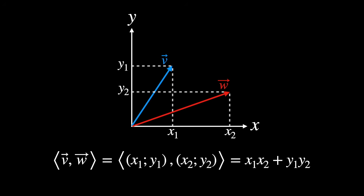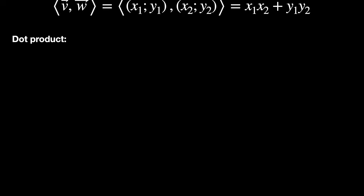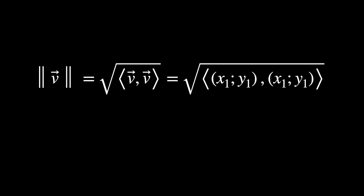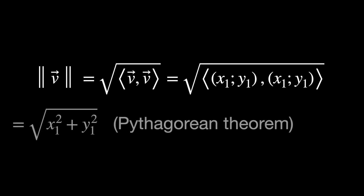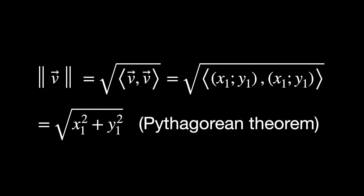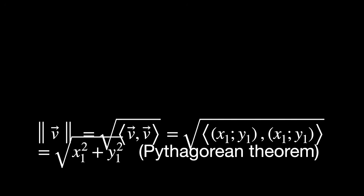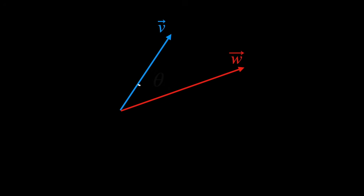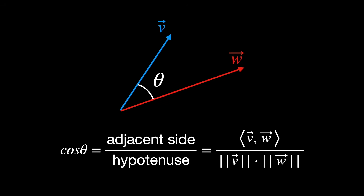The standard inner product — which in this particular case is also called the dot product — is x₁ times x₂ plus y₁ times y₂. This implies that the length of vector v can be calculated as the square root of x² plus y² — just the Pythagorean theorem. And the angle formed between the two vectors is calculated using the cosine formula: the dot product divided by the product of the lengths of each vector.